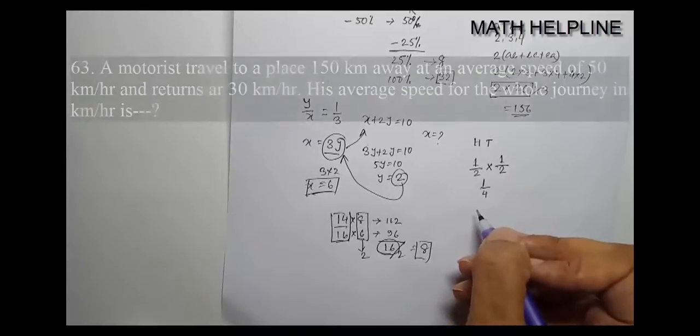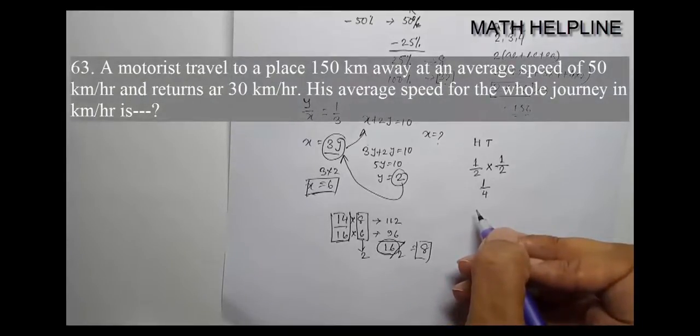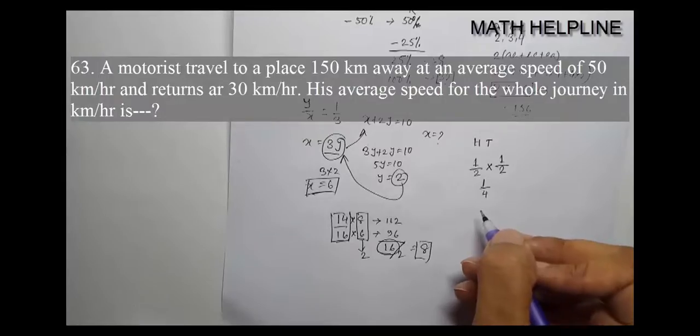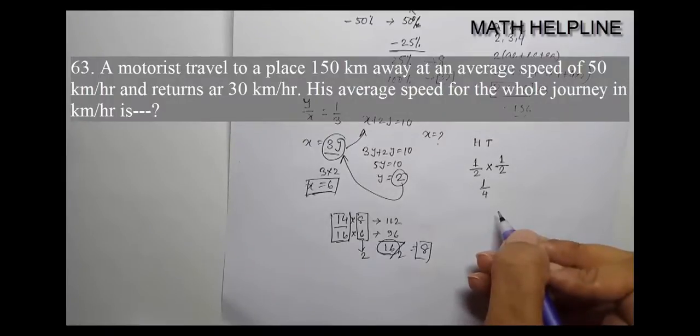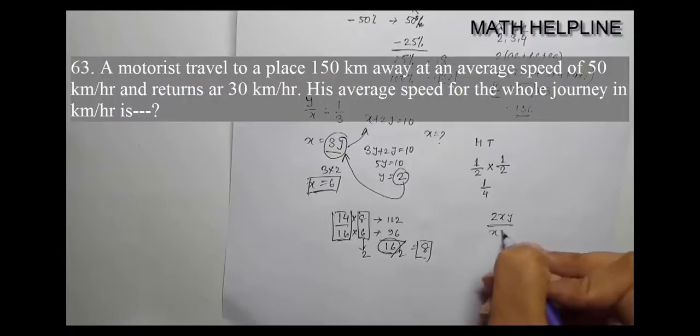A motorist travels to a place 150 km away at an average speed of 50 km per hour and returns at 30 km per hour. His average speed for the whole journey in km per hour is? The average speed is 50 going and 30 returning. The formula for average speed is 2xy divided by x plus y.